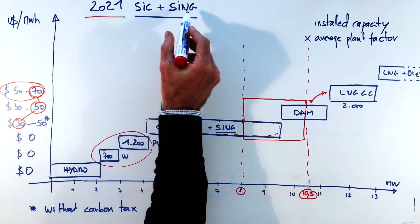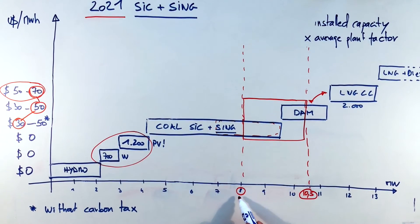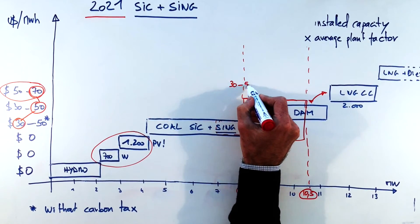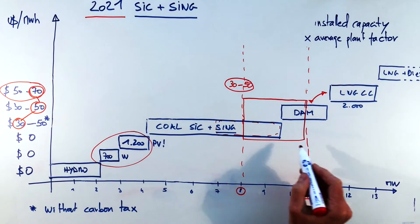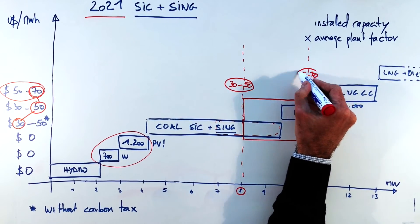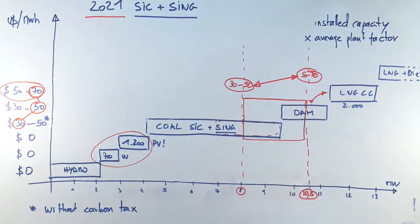So to summarize this part, 2021 SIC and SING merge, demand will be oscillating between 8,000 and 10,500 megawatts and will be satisfied mainly by coal with a price between 30 and 50 dollars per megawatt hour and either dam or LNG with a price between 50 and 70 dollars per megawatt hour.